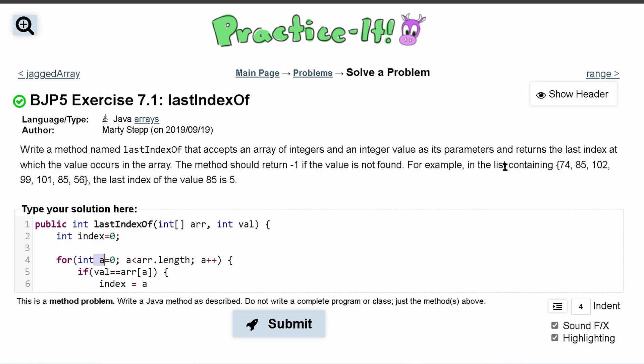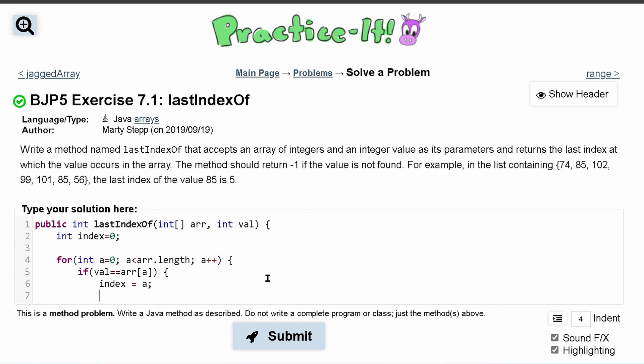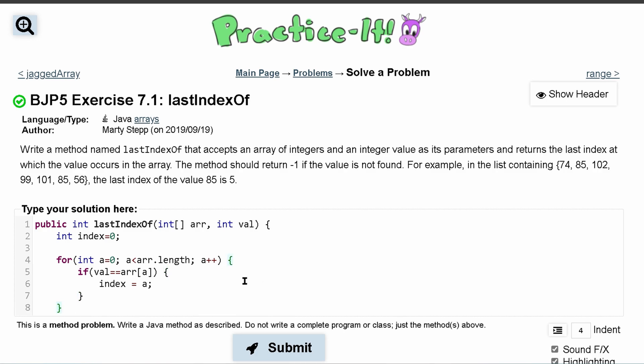Because we want to return the index value, right? We want to return that value. So we want to return this. We can close that if statement, close this for loop.